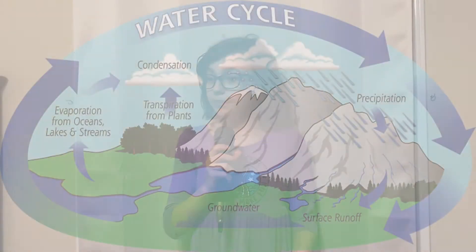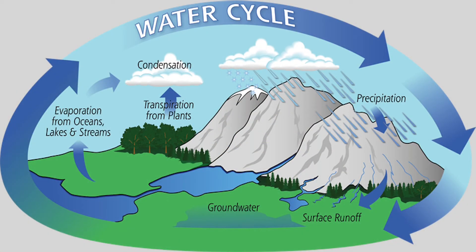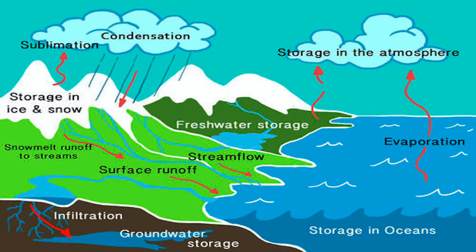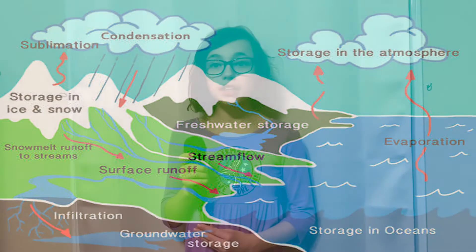The last part is runoff, where the water from rain, snow, sleet, or hail falls and either sinks into the ground and becomes groundwater, where underground animals, bugs, or plants can use it to grow — or the water doesn't soak into the ground and becomes runoff, flowing down a hill or a street.